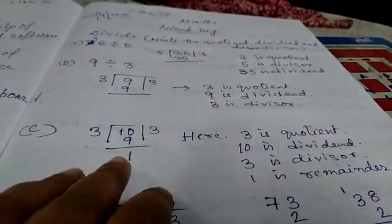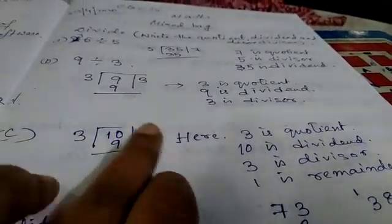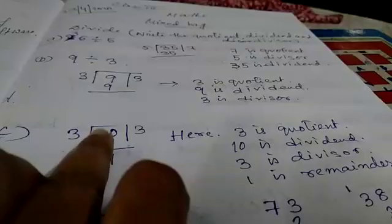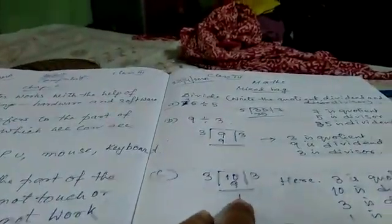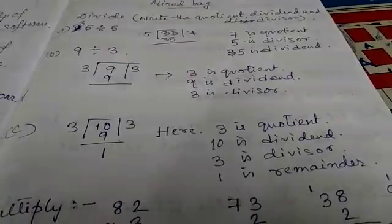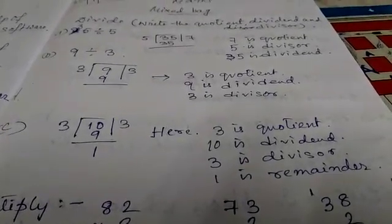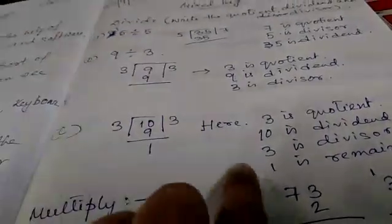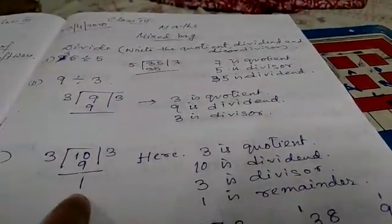Here, 10 divided by 3. When we are dividing 10 by 3, we know 3×3=9. But here is 10. So when we subtract 9 from 10, how much? 1. This 1 is the remainder. This is the quotient, this is the dividend, this is the divisor, and this is the remainder.